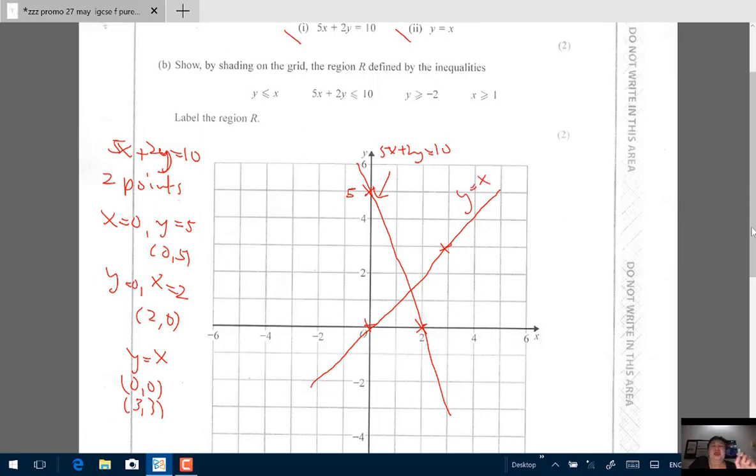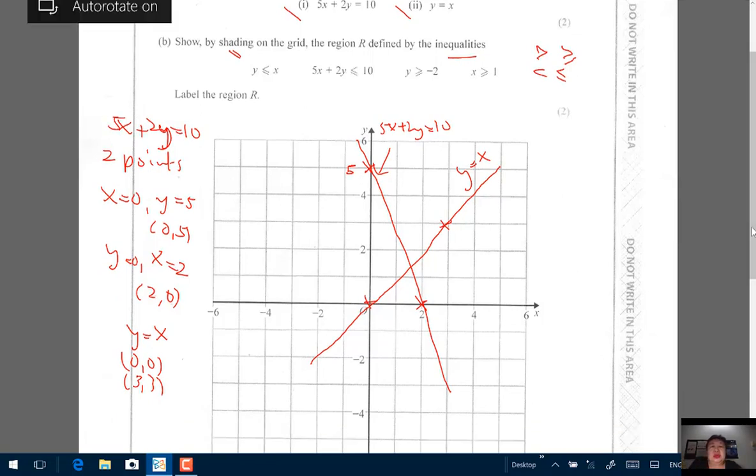Now that's part A. Part B is show by shading on the grid the region defined by the inequalities. Inequalities are always defined by this symbol: greater, greater and equal, less than, less than equal. There's a little trick here which I like to tell my students quickly to identify which is the area that you need to shade for an inequality. Is it above or below that straight line?